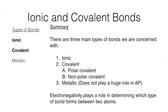To wrap things up, there are three main types of bonds: ionic bonds, covalent bonds — which can be further divided into polar covalent and nonpolar covalent — and metallic bonds, which don't play a huge role on the AP exam. We can use electronegativity to determine which type of bond will typically form between atoms. Coming up next, we're going to look at the energy in both ionic and covalent bonds, particularly lattice energy and bond enthalpy.